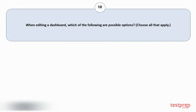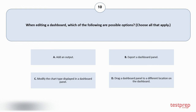Question number ten: when editing a dashboard, which of the following are possible options? Choose all that apply. Your options are: A) add an output, B) export a dashboard panel, C) modify the chart type displayed in a dashboard panel, D) drag a dashboard panel to a different location on the dashboard. The correct answer is option C.